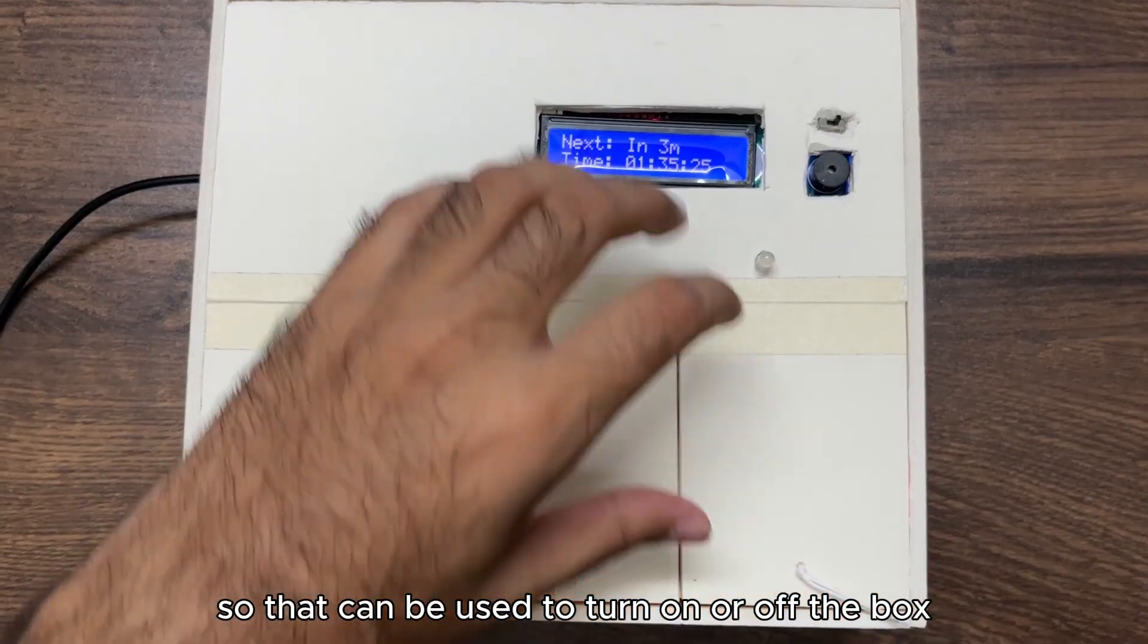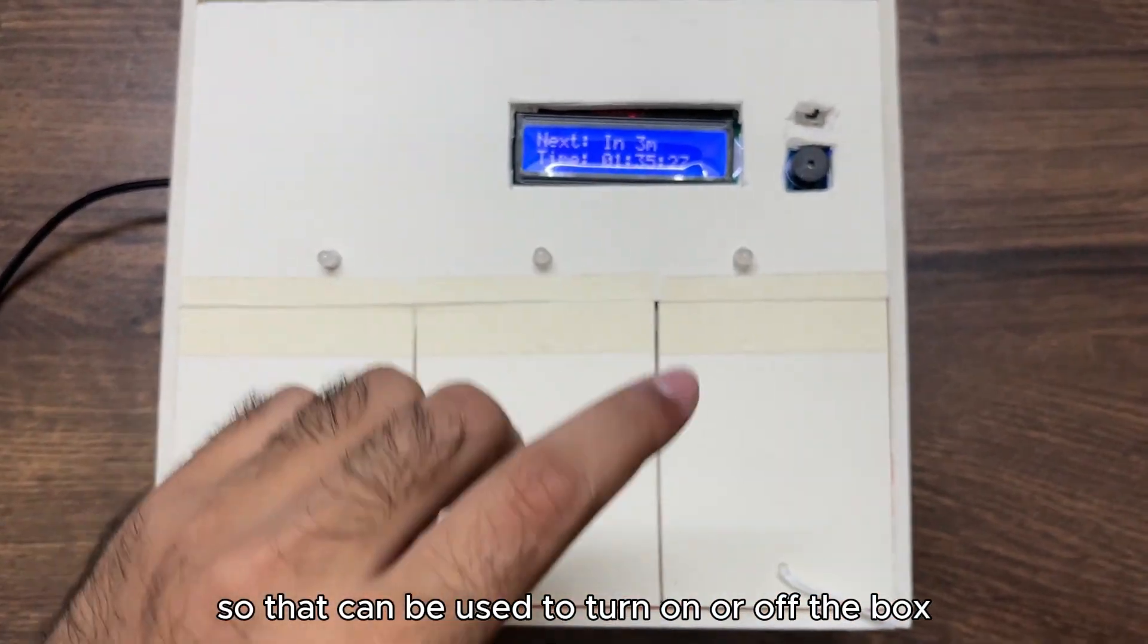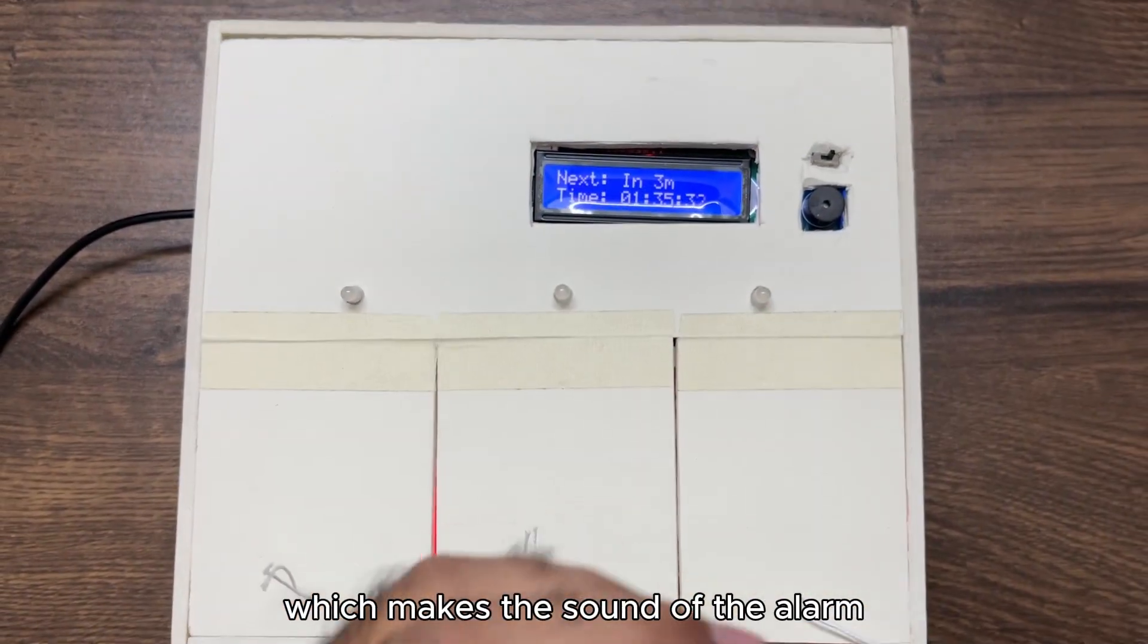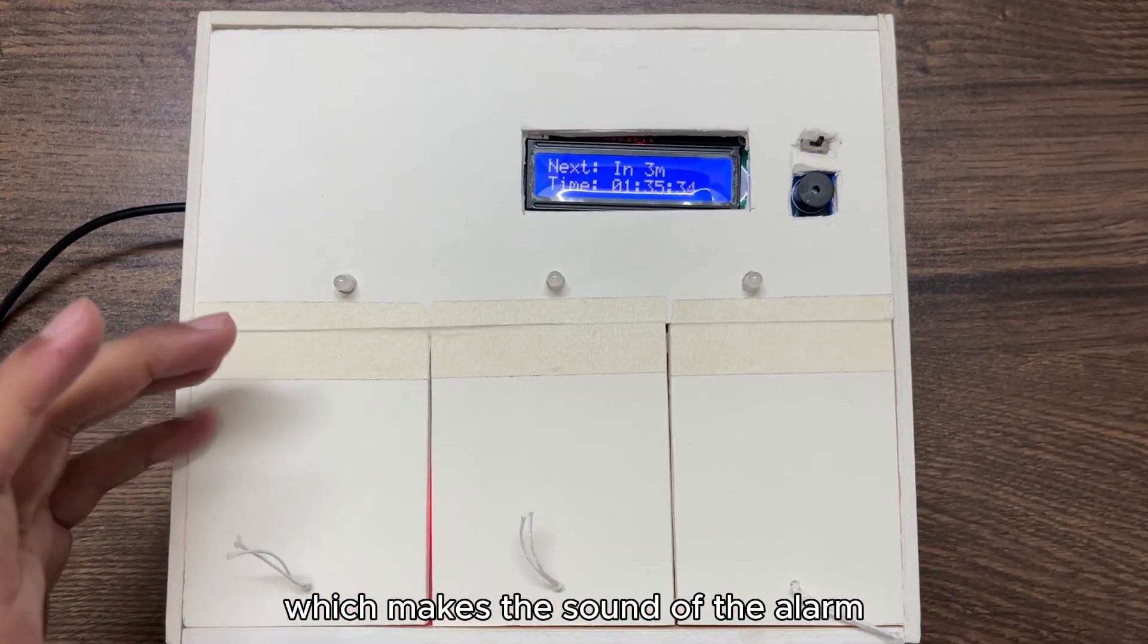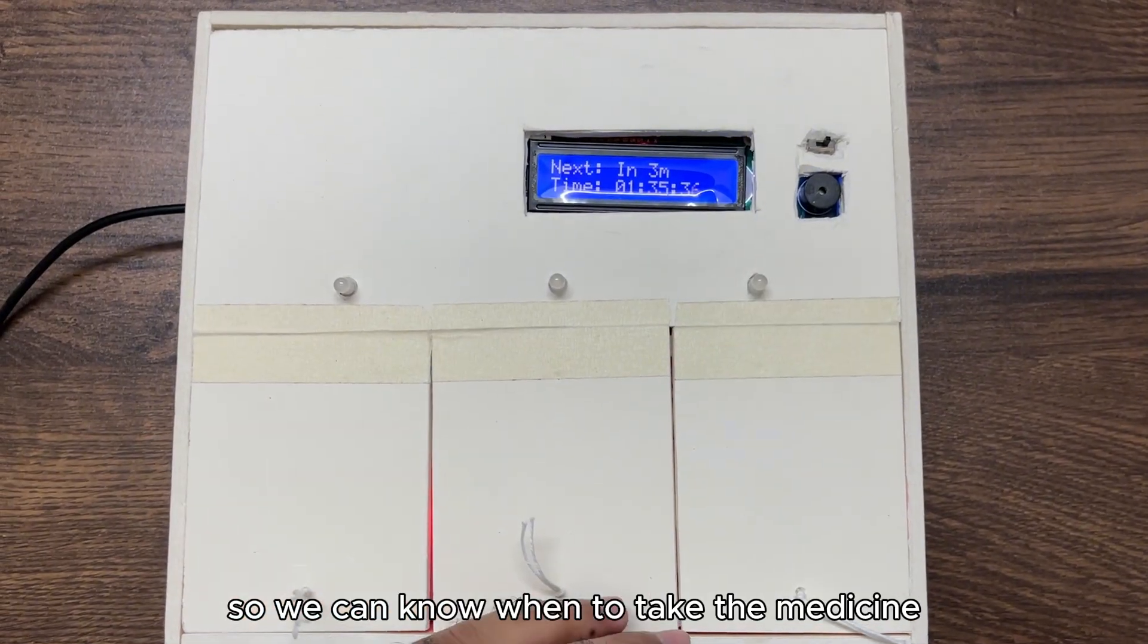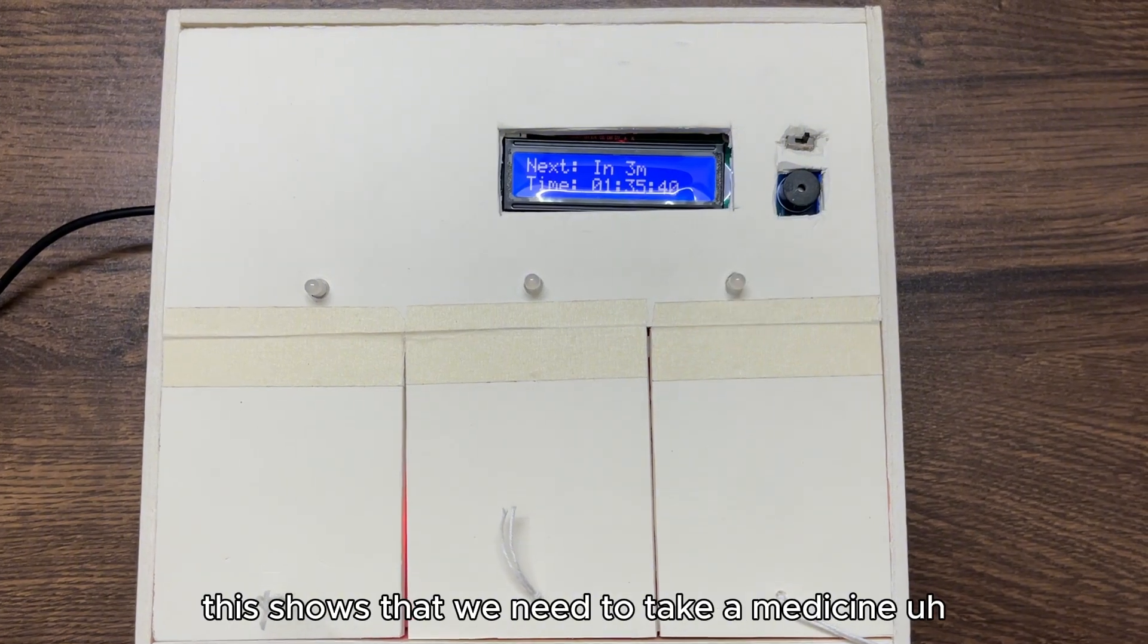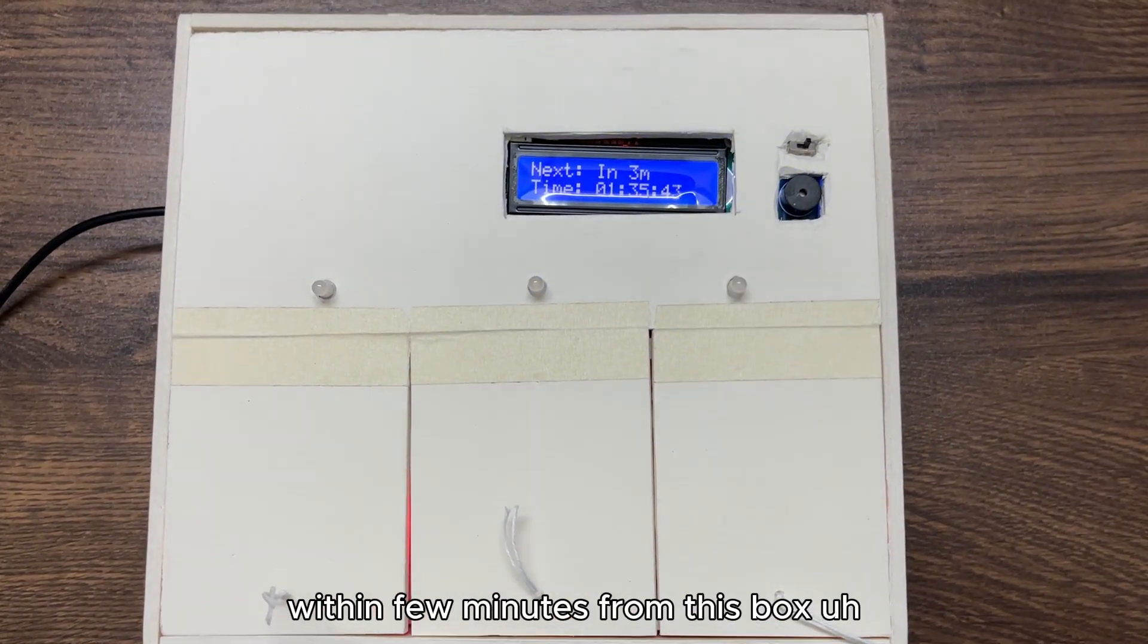The battery can be used to power the box. We can see here a buzzer which makes the sound of the alarm so we can know when to take the medicine. As we can see, the blue light is blinking. This shows that we need to take medicine within few minutes from this box.